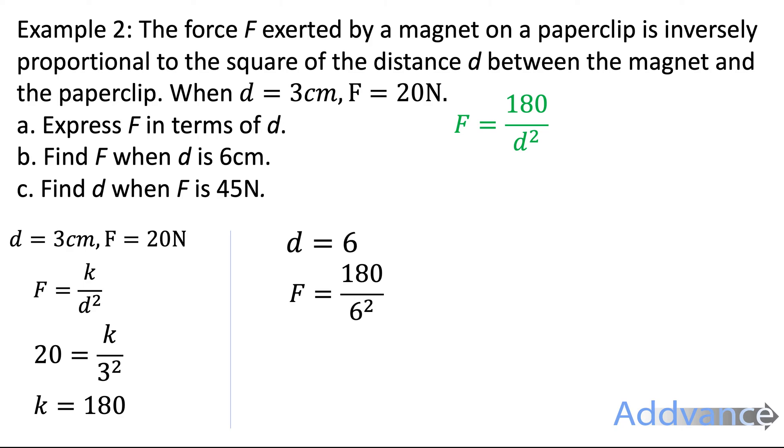F is 180 divided by 6 squared. On your calculator, that's 180 divided by 36, which is 5. And so the force is 5 newtons.